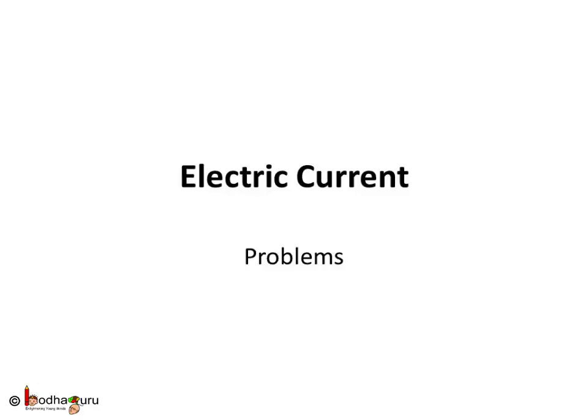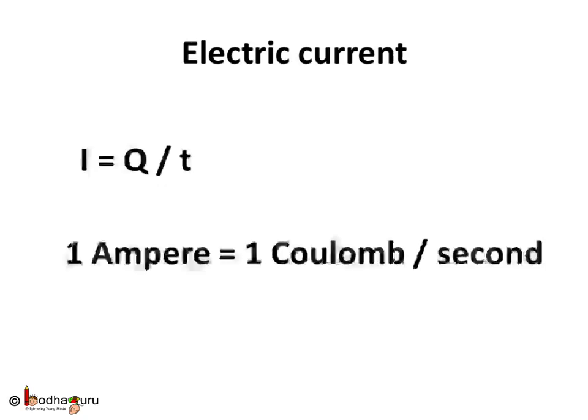Hello friends! In the last lesson we learned what is electric current. Electric current is the flow of charges through the conductor per second and is represented by I.